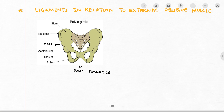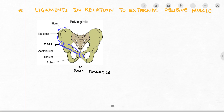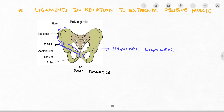Now the ligaments in relation to the external oblique muscle. The external oblique runs from the anterior superior iliac spine to the pubic tubercle. From the ASIS it goes to the pubic tubercle and gets upturned. This upturning from the anterior superior iliac spine towards the pubic tubercle gives rise to the inguinal ligament, also known as Poupart's ligament.